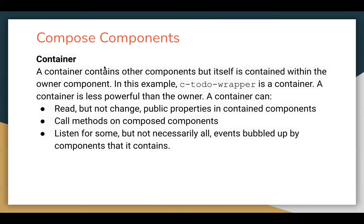Then we have the container component. A container contains other components, but itself is contained within the owner component. In this example, todo-wrapper is a container. A container is less powerful than the owner. A container can read but not change public properties on contained components, call methods on composed components, and listen for some but not necessarily all events bubbled up by the components that it contains. So container components have less rights compared to the owner component.